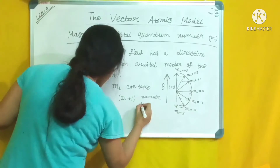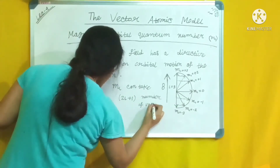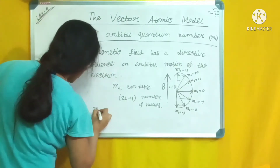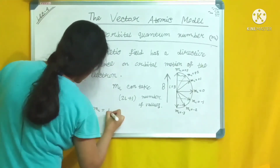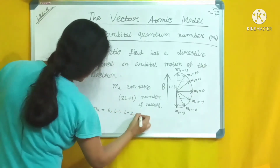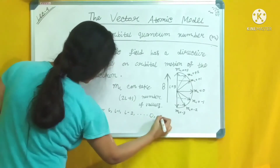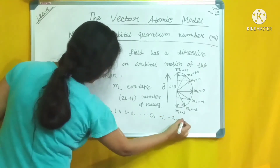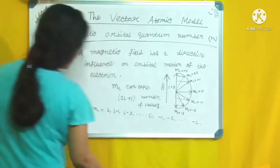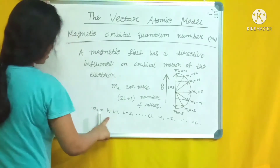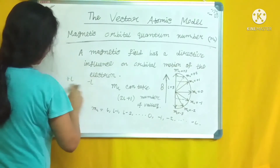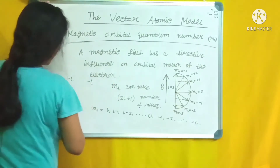ml can take 2l+1 number of values depending on the value of l. It will have total 2l+1 values ranging from +l to −l.